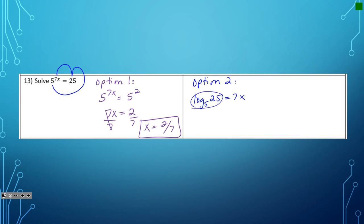If you put this into your calculator, it's going to give you 2. And then we're back down to the exact same equation. So x equals 2 7ths, either way.